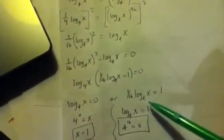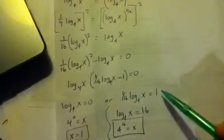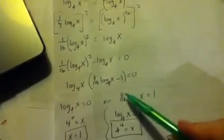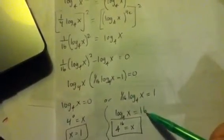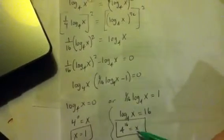And then over here, I'd have to multiply both sides by sixteen to get that to go away. That's where the sixteen came from. And then four to the sixteenth is x.